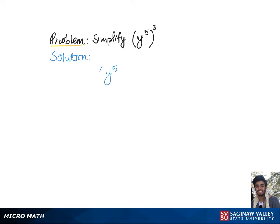To simplify y to the 5th raised to the 3rd power, let's go over the rule which says to raise a power to another power, we keep the base and simply multiply the exponents together.